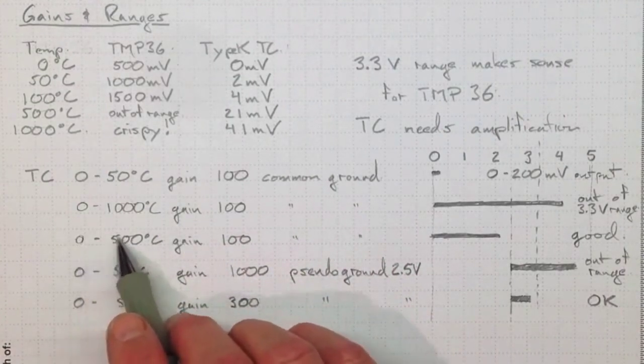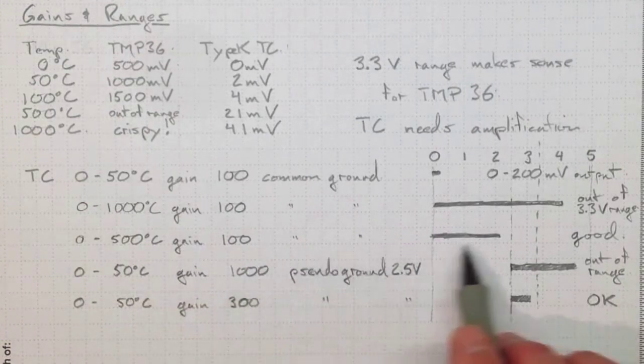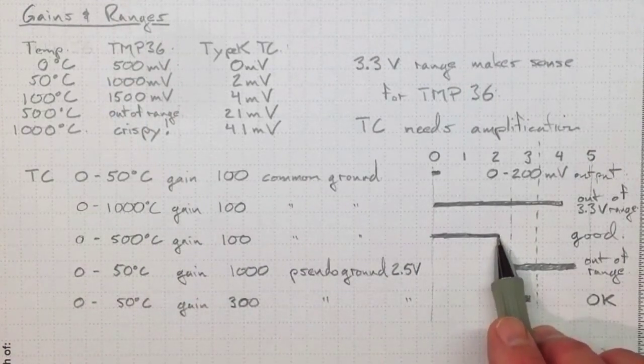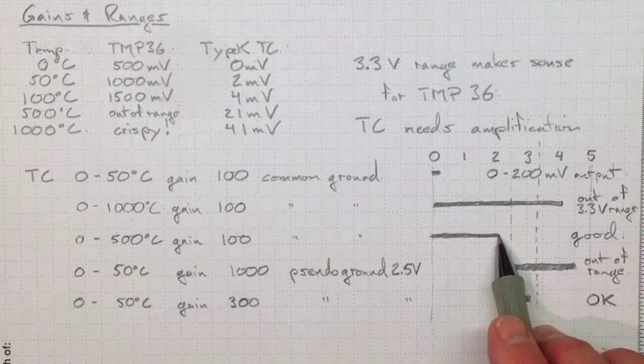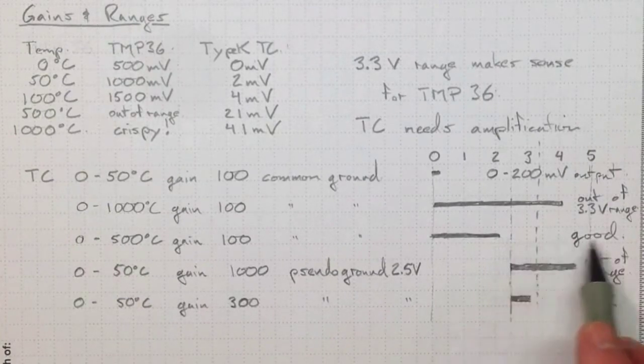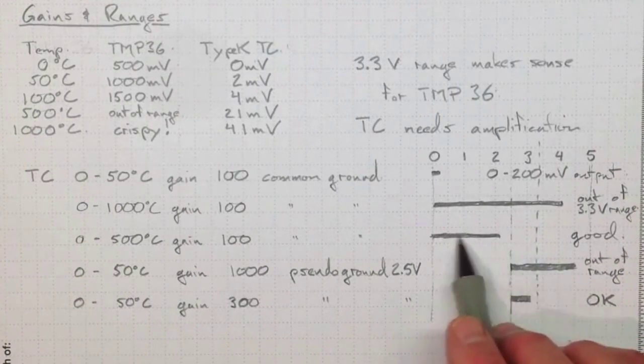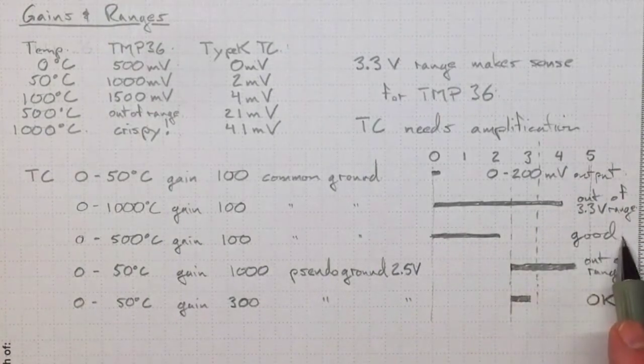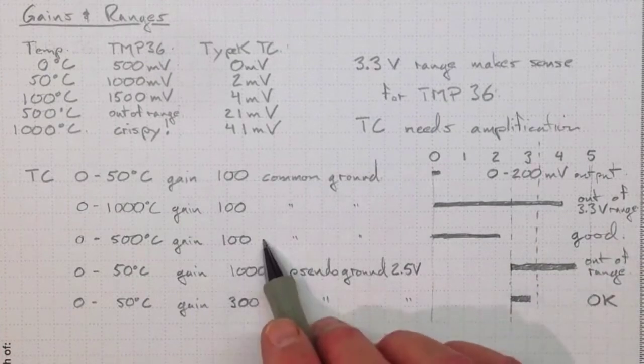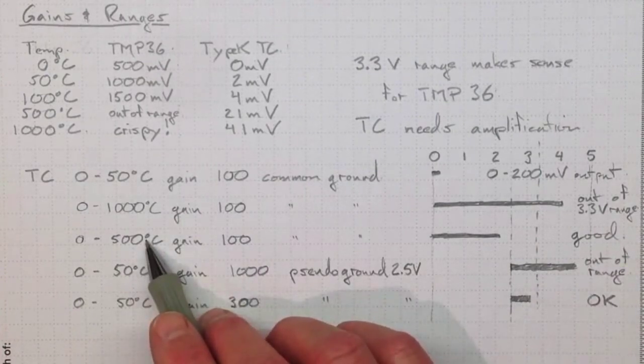If we were looking at zero to five hundred degrees C with a gain of one hundred, that would work just fine. We'd get up to a little over two volts input. We'd be making good use of the range - we're using about two-thirds of our range in there, so that's giving us good resolution. That's a good choice for measuring zero to five hundred degrees Celsius.